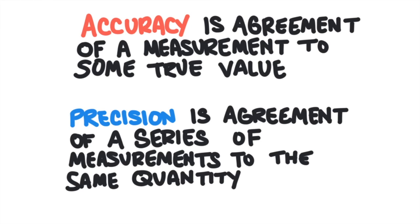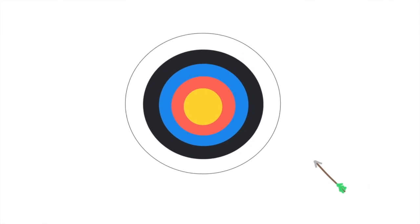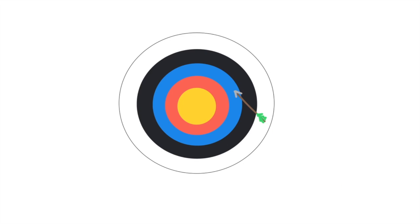It's important to understand the difference between these two terms. Accuracy is the agreement of measurements to some true value. Precision is the agreement of multiple measurements to the same quantity. For example, an archer fires an arrow at a target and misses the target each time, but they all hit in the same area. So although the archer is inaccurate, the archer is very precise.